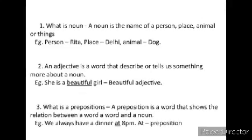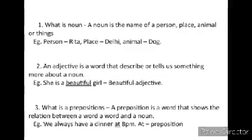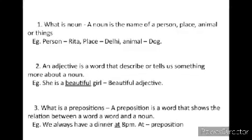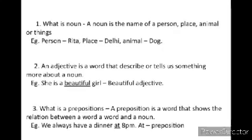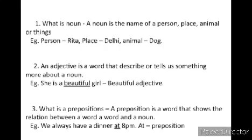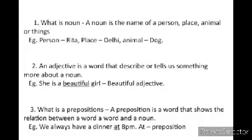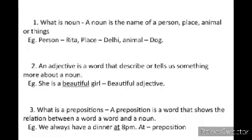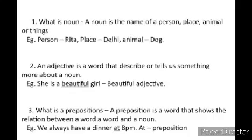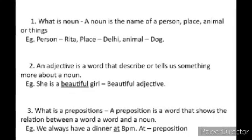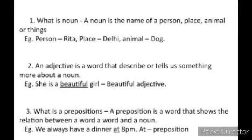What is an adjective? An adjective is a word that describes or tells us something more about a noun. For example, she is a beautiful girl. Beautiful is the adjective. What is a preposition? A preposition is a word that shows the relationship between a word and a noun. For example, we always have dinner at 8 p.m. – 'at' is the preposition.